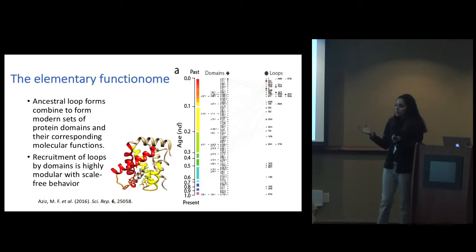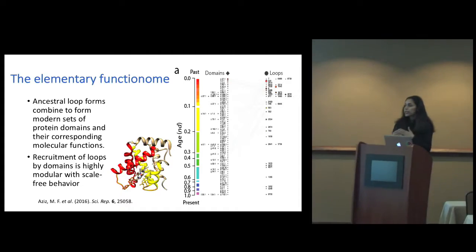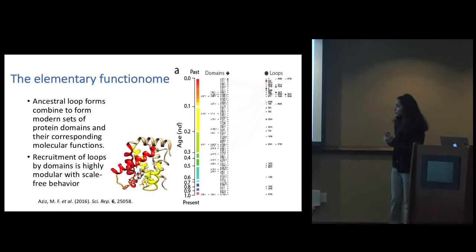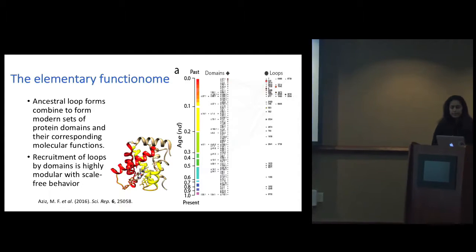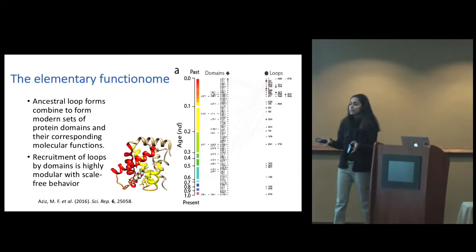Based on this bipartite network, projections were created of the domain network and the loop network. The domain network would have connections if domains share loops. The loop network would have connections if they are part of the same domain. This elementary functionome bipartite network was then plotted along the phylogenomic reconstruction of evolutionary timelines of our lab. The most important result was that recruitment of loops by domains is highly modular with scale-free behavior.